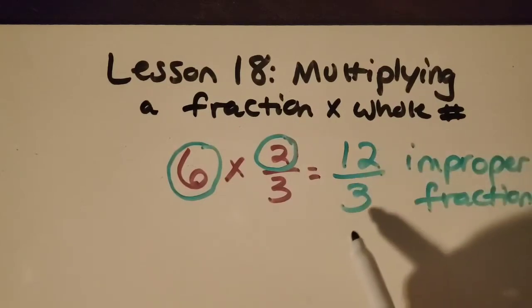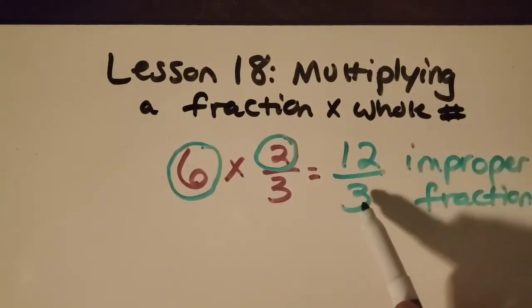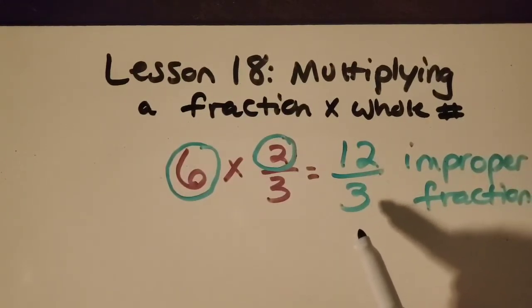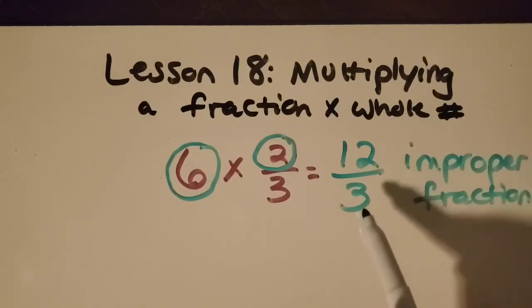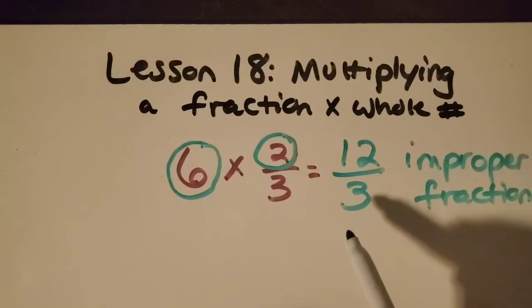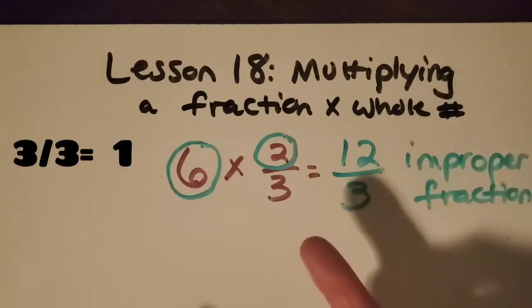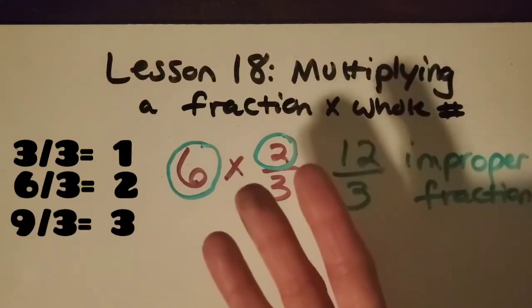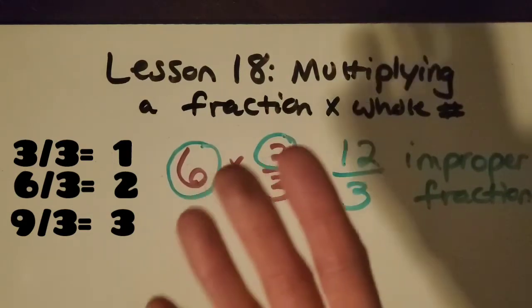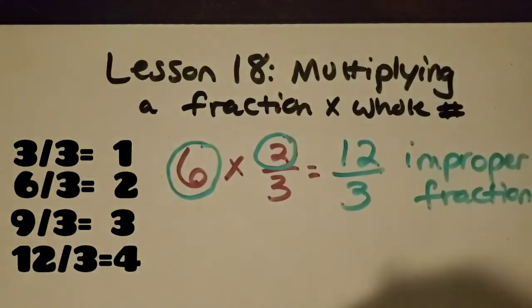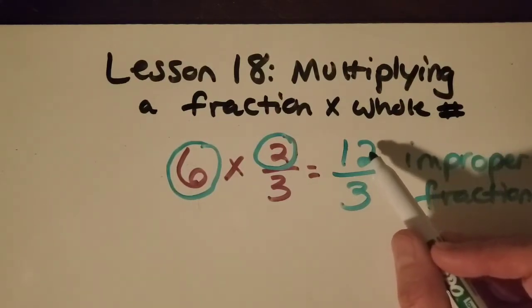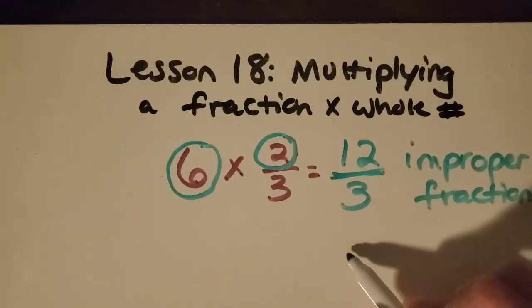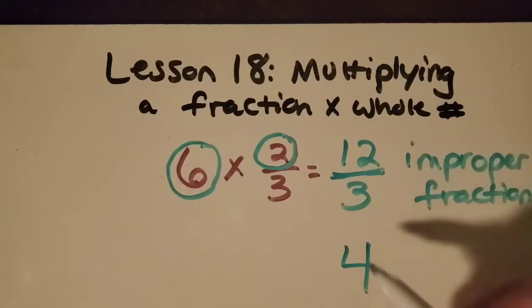So to simplify this, we need to think about thirds. So how many thirds make up one whole? Great, three. So if I count by threes, I've got three are one whole, then six are two wholes, nine are three, and twelve are four wholes. So my answer, and I can also think about it this way, twelve divided by three is four whole. So four is my answer.